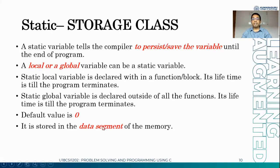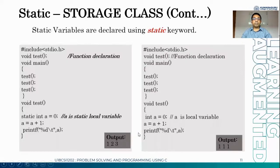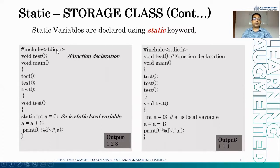Static storage class variables are stored in the data segment of the memory. We'll see an example. The static variable is declared using the keyword 'static'. Here I have two versions of the same program: one with a static variable and one without.